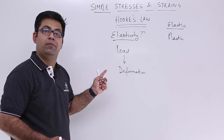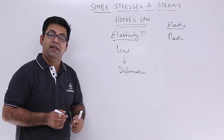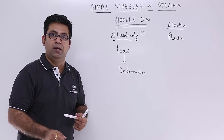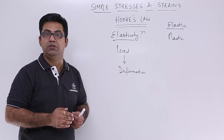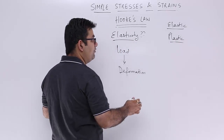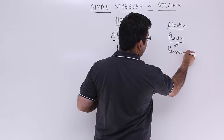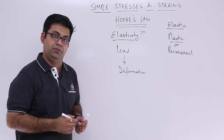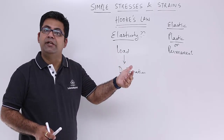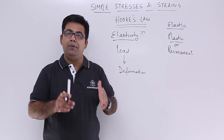That kind of deformation is called elastic deformation. But if even after removal of the load the body is unable to trace back to its original shape, the deformation is called plastic deformation, or it has another name: permanent deformation. So what is the term elasticity?